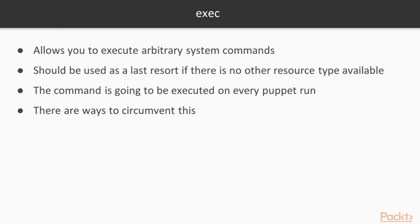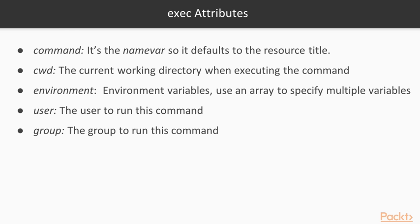There are ways to circumvent executing the command on every Puppet run. The important exec attributes: first of all there is command, which is also the name var, so it defaults to the resource title. This is the command that is going to be executed. Then there is cwd, the current working directory — this is the working directory where the command is going to be executed.